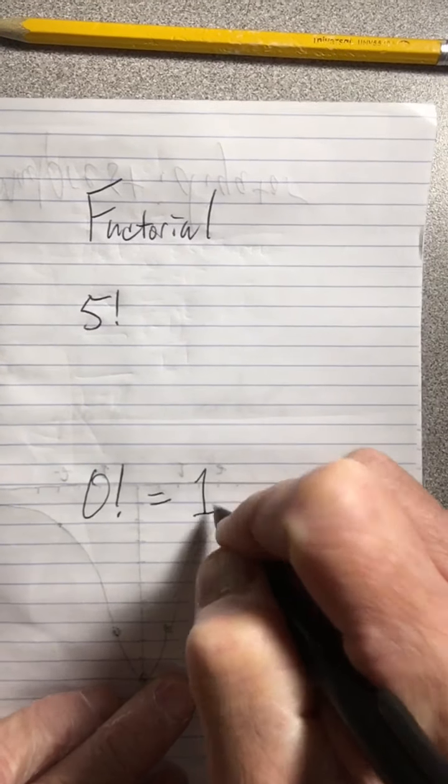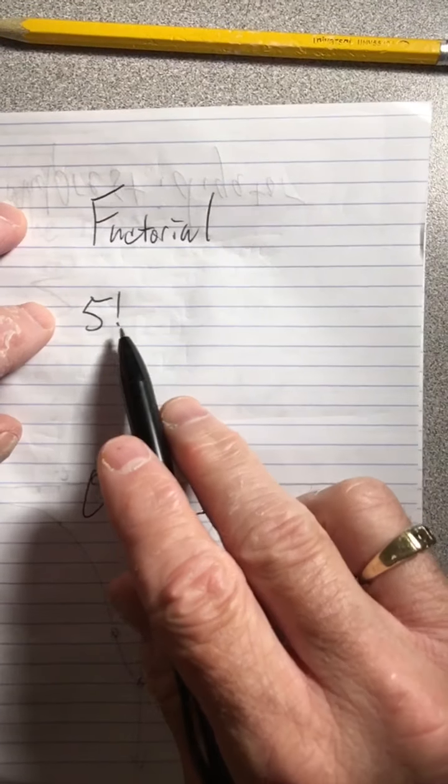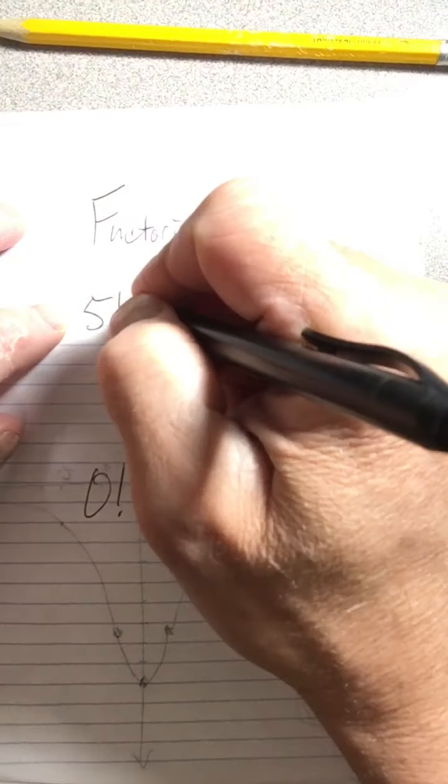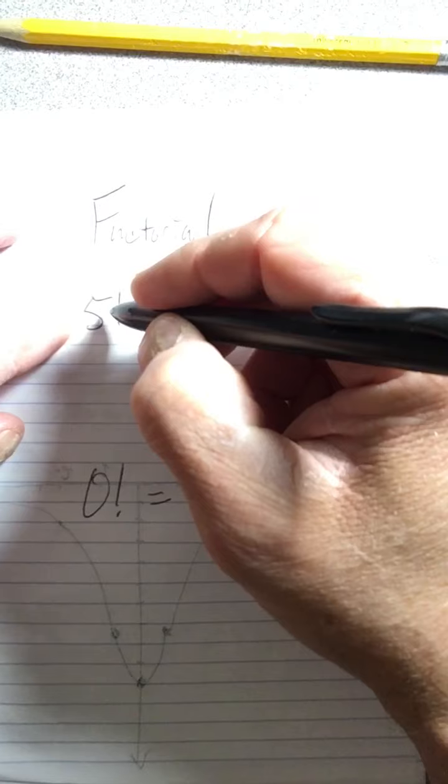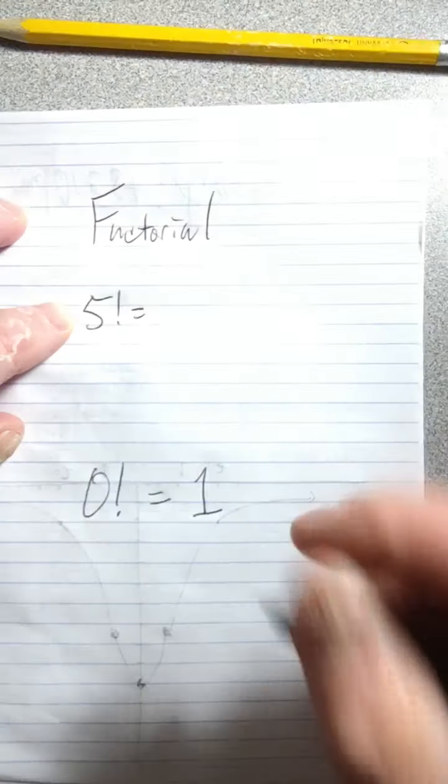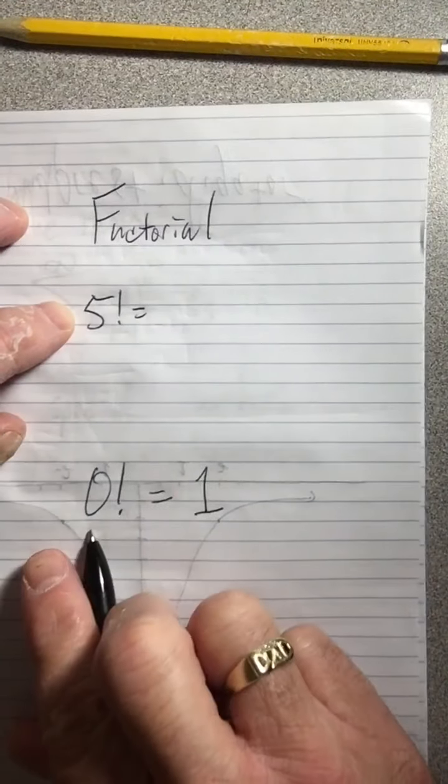The normal definition is you multiply the whole number by every whole number before it, all the way down to one, and then you stop. That's why zero is special, because zero doesn't have any numbers below it going to one.